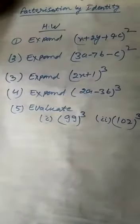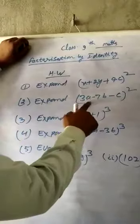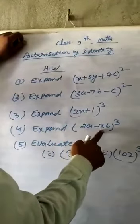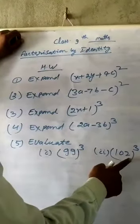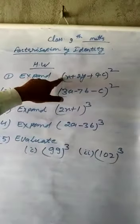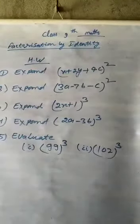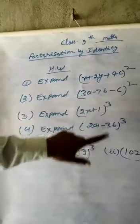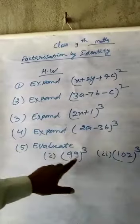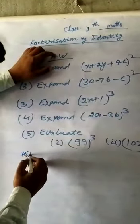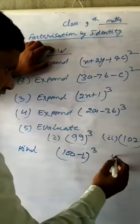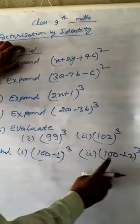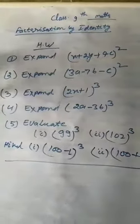Homework: Expand 100 to power 3. In question number 1 and 2, use identity A plus B plus C whole square. Question number 3 and 4, use identity A plus B whole cube. And in this question, evaluate 100 minus 1 power 3 using A minus B whole cube, and 100 plus 2 whole cube using A plus B whole cube. Solve the given questions in homework. Thank you.